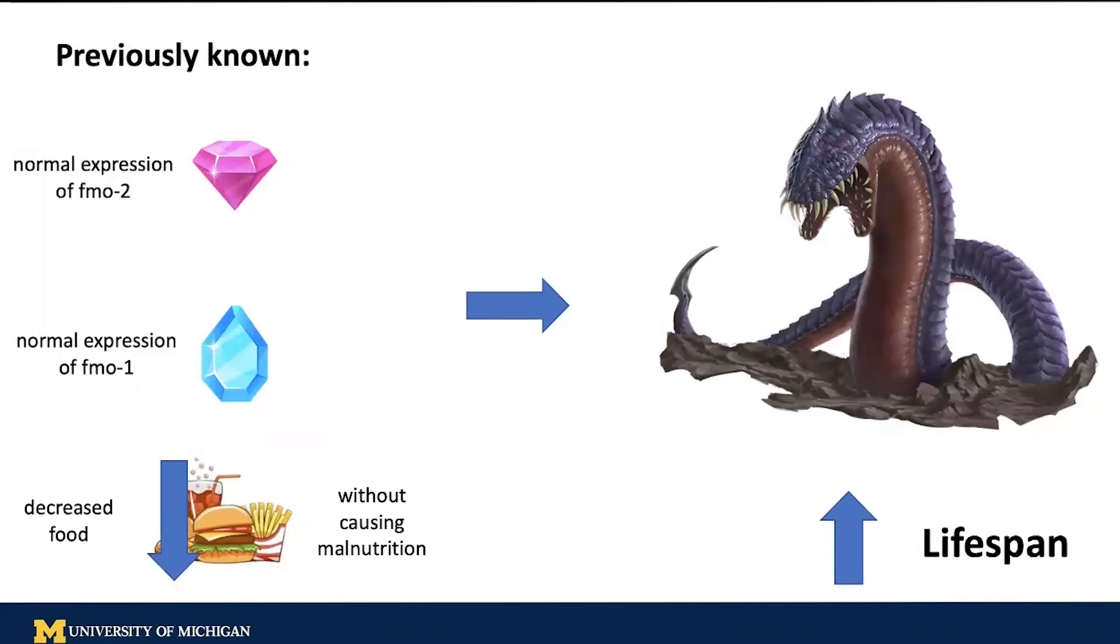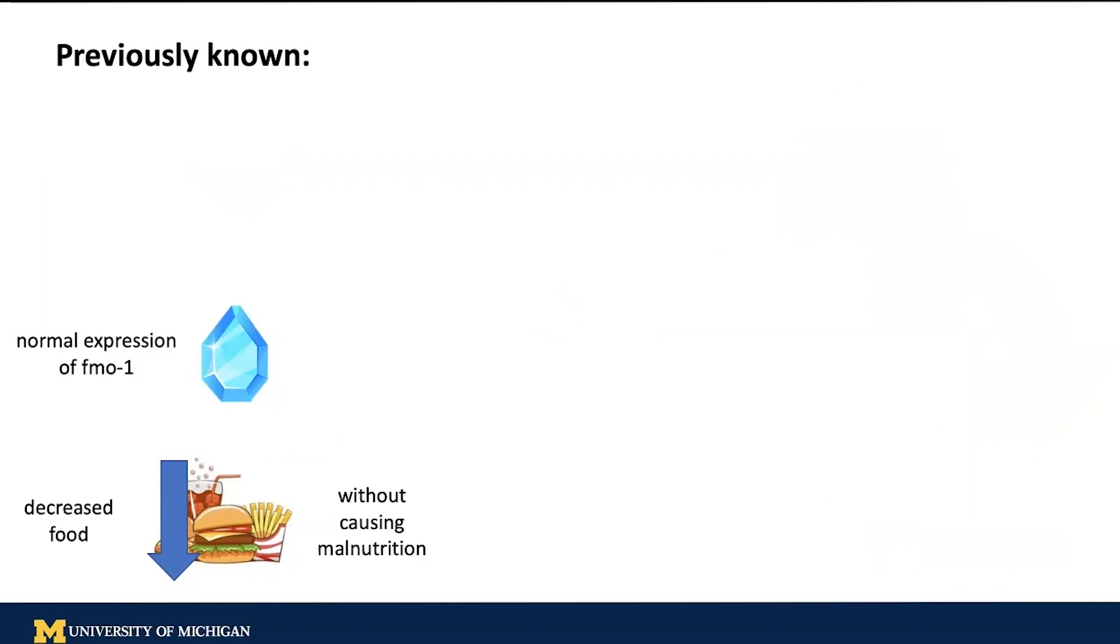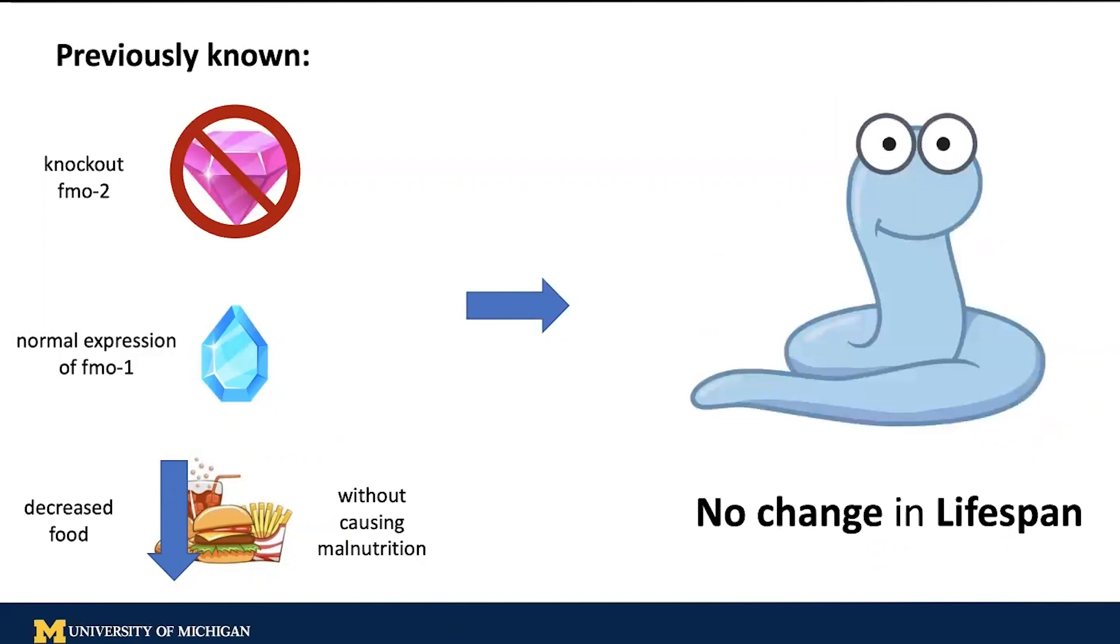The third thing we know is that while you still decrease food, if you get rid of the pink gem, you'll end up getting a normal worm instead of a long-lived worm monster.